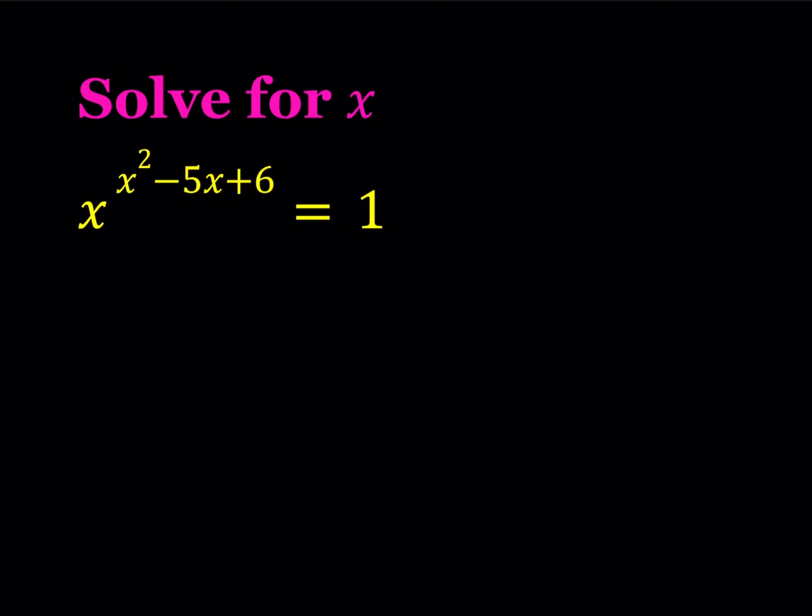So when you have an exponential equation one of the things you look at is if you have the same base. So if I have something like 2 to the power x equals 4 then I can basically write this as 2 to the power x equals 2 to the second and from here I can just conclude that x equals 2.